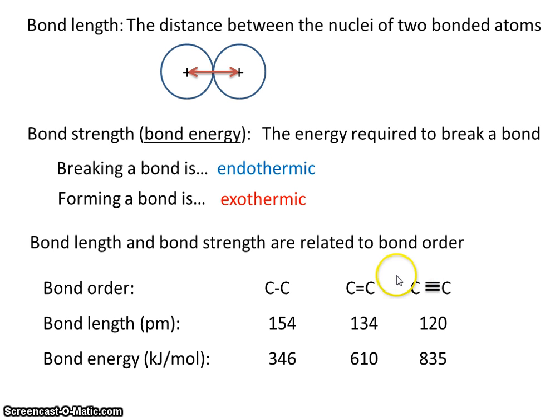Let's look at what happens with the bond length. We go from 154 to 134 to 120. So as bond order increases, bond length decreases. That type of relationship is called inverse. When one thing gets bigger and the other thing gets smaller, that's called inverse.